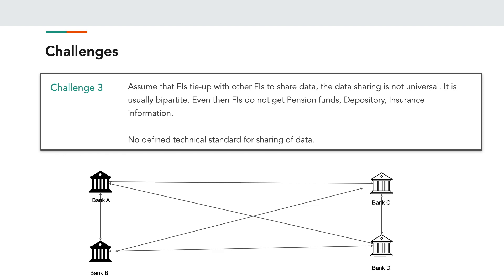The third challenge is that if financial institutions tie up with other financial institutions or third-party companies, each bank would need to tie up with every single other bank. This could result in a lot of connections going on between these banks, and there is no technical standard defined for how banks can share data between them.